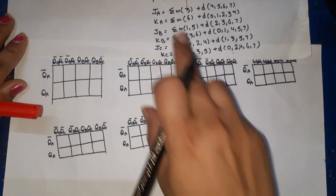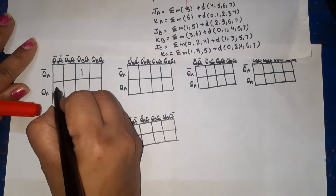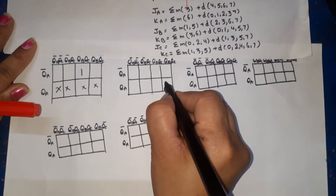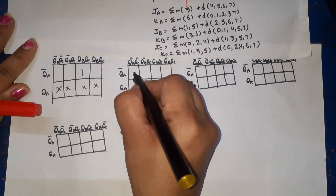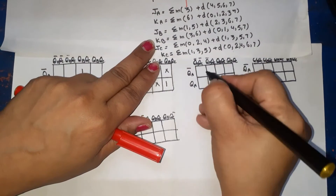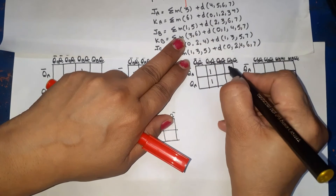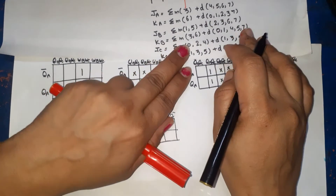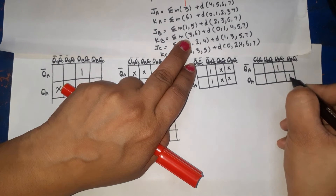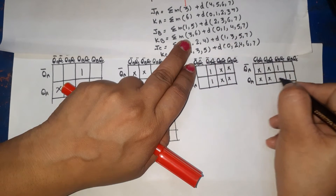Plotting values on the K-maps: For JA, minterms at 3, 4, 5, 6, 7 are 1. For KA, minterm 6 is 1 and don't cares at 0, 1, 2, 3, 7. For JB, minterms 1 and 5 are 1, don't cares at 2, 3, 6, 7. For KB, minterms 3 and 6 are 1, don't cares at 0, 1, 4, 5, 7.